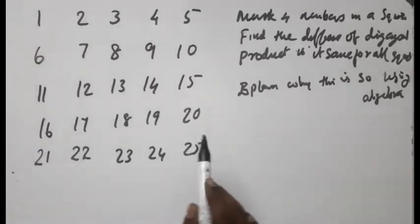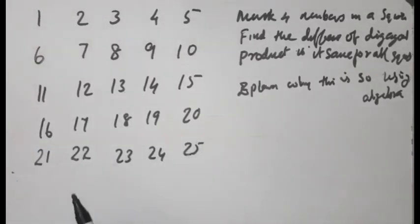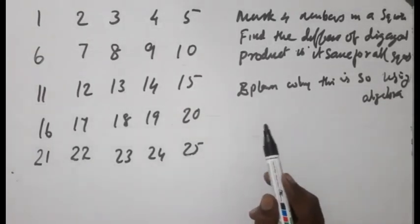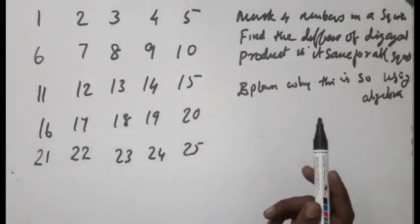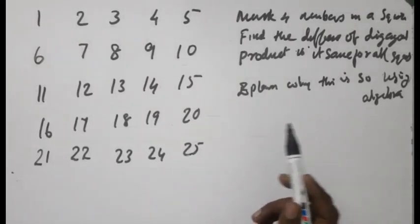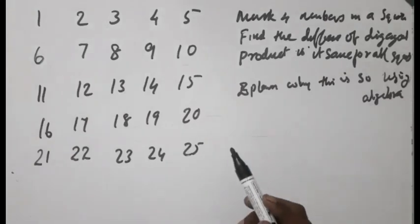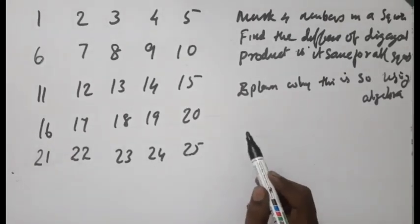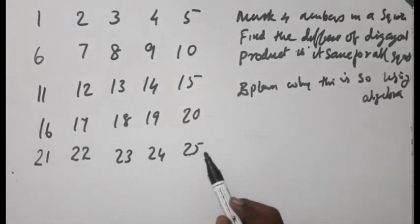I'm going to talk to you about the first question: mark four numbers in squares, find the difference of diagonal products. Is it the same for all squares? Second question: explain why this is so using algebra.